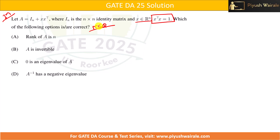We have four options. In this question we need to find out the rank, whether A is invertible or not, and the eigenvalues. All of these are connected, and ultimately they relate to eigenvalues. Let me cover two important points first.